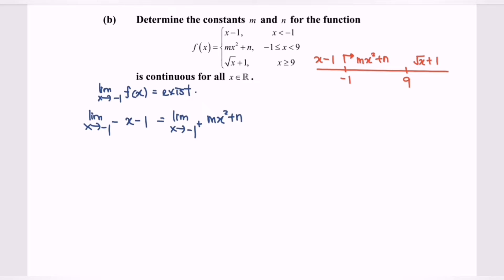Next, substitute the value of negative 1 and we will obtain negative 2 on the left and then we will have m + n on the right. This will be the first equation.